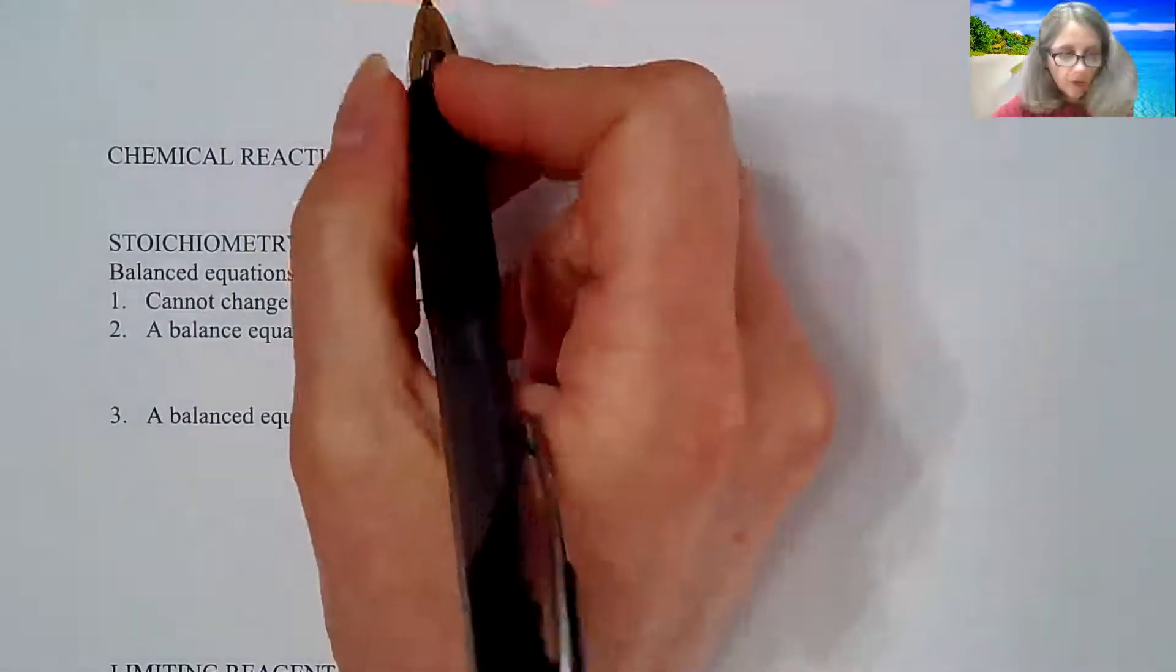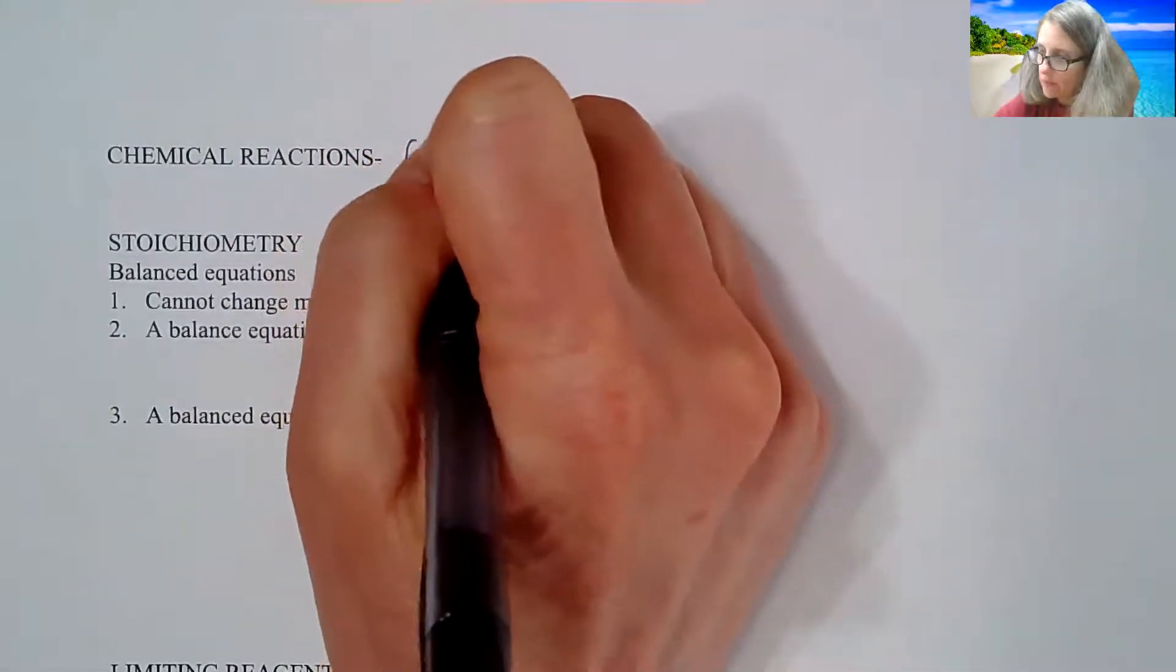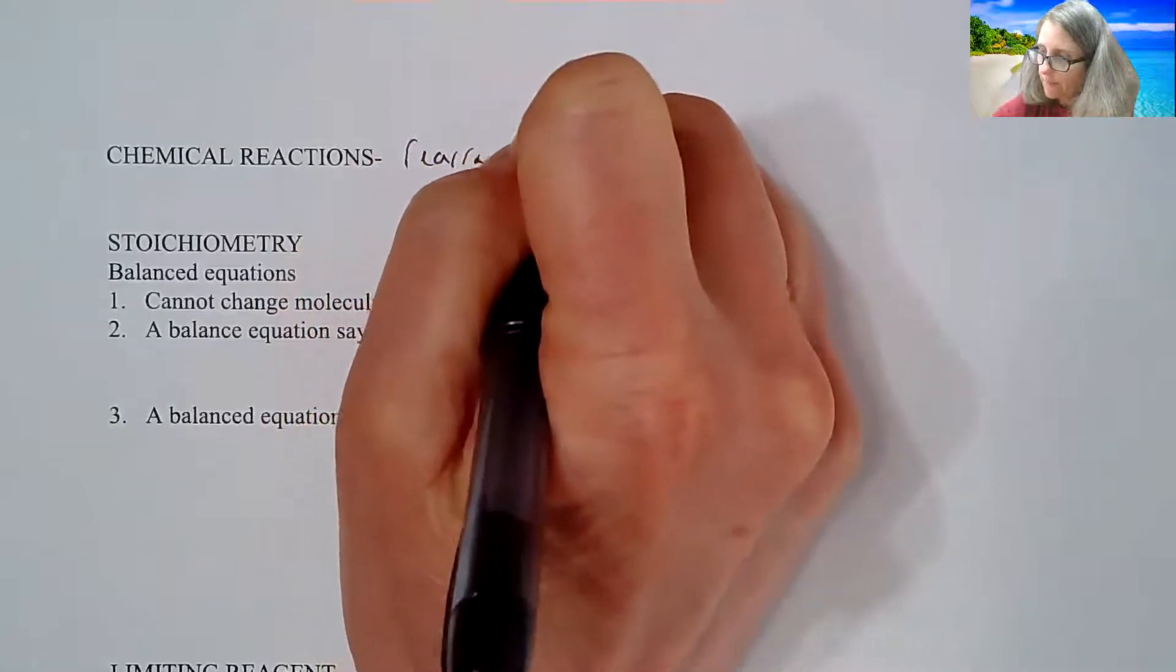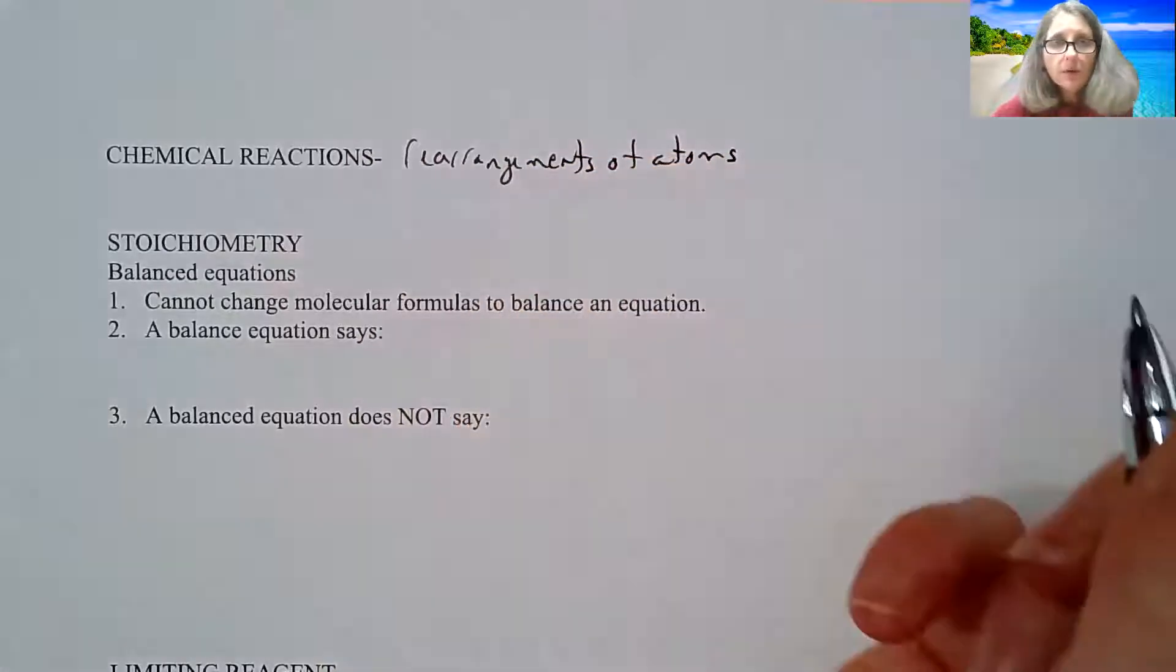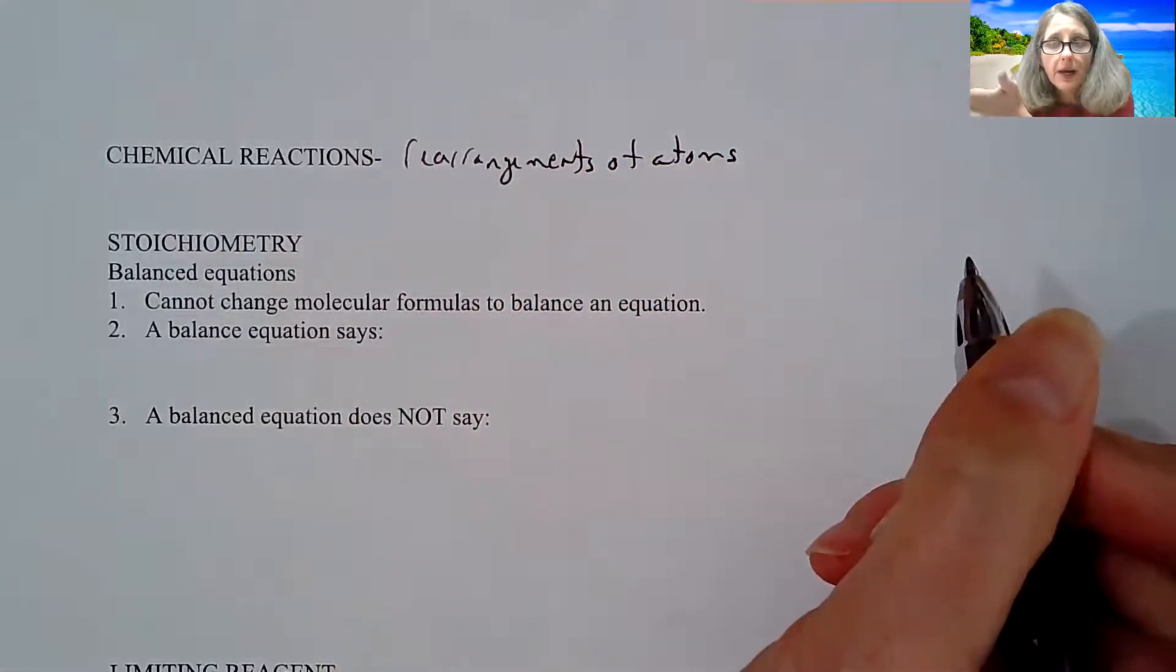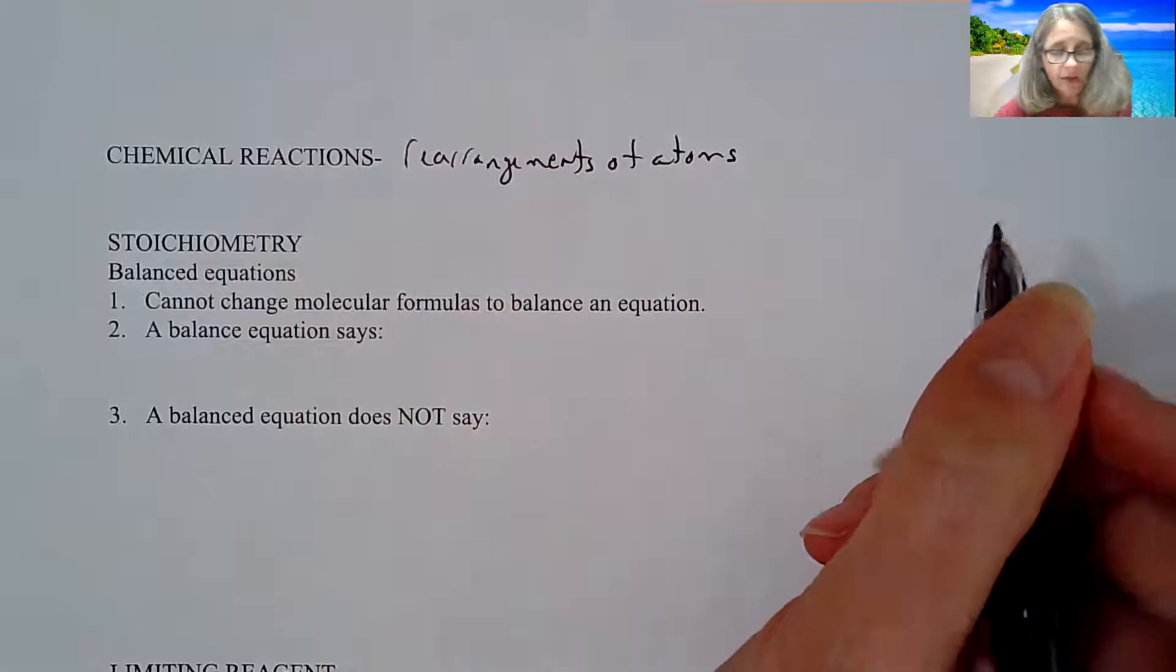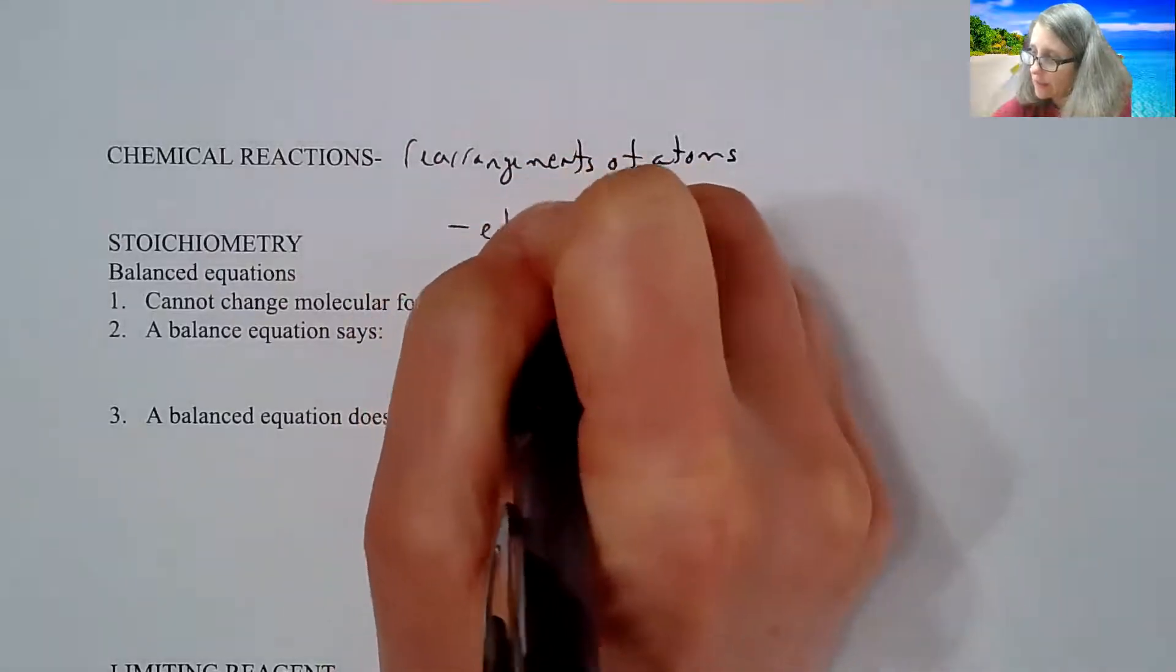So on to the next page, we are now going to get into a little bit of review of what we call stoichiometry. When we're looking at chemical reactions, we are looking at rearrangements of atoms. That's really what a chemical reaction does.